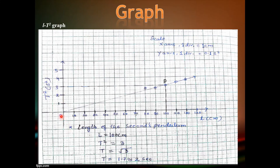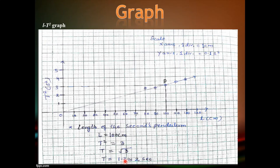Graph: You can see the L-T² graph with L along the x-axis and T² along the y-axis. Scale factor along x-axis: one division equals 1 cm; along y-axis: one division equals 0.1 second square. The graph plotted between effective length and T² comes out to be a straight line passing through the origin. We use this graph to find the length of the seconds pendulum. Taking a point P on the slope for effective length 100 cm, the corresponding T² is 3, so T = 1.7 seconds, which we round off to 2 seconds given the stopwatch's least count of 1 second.